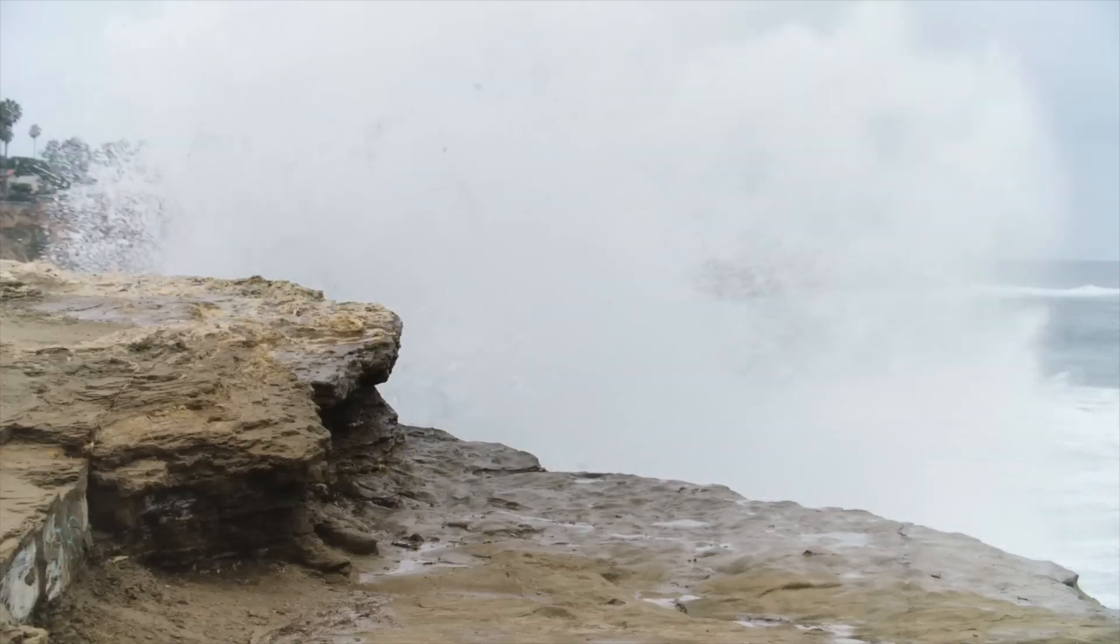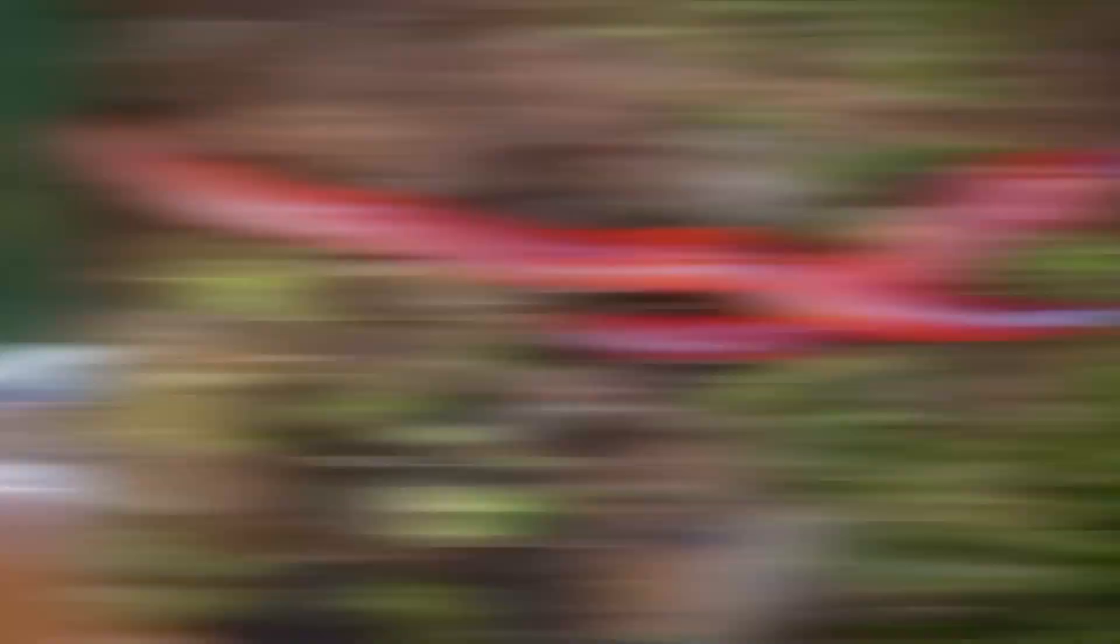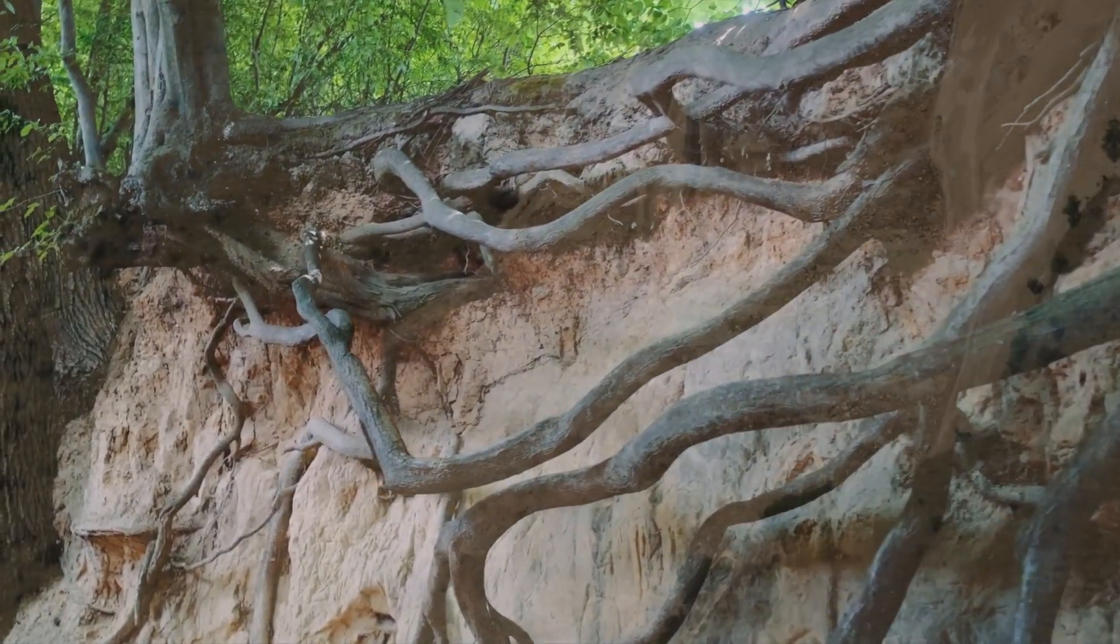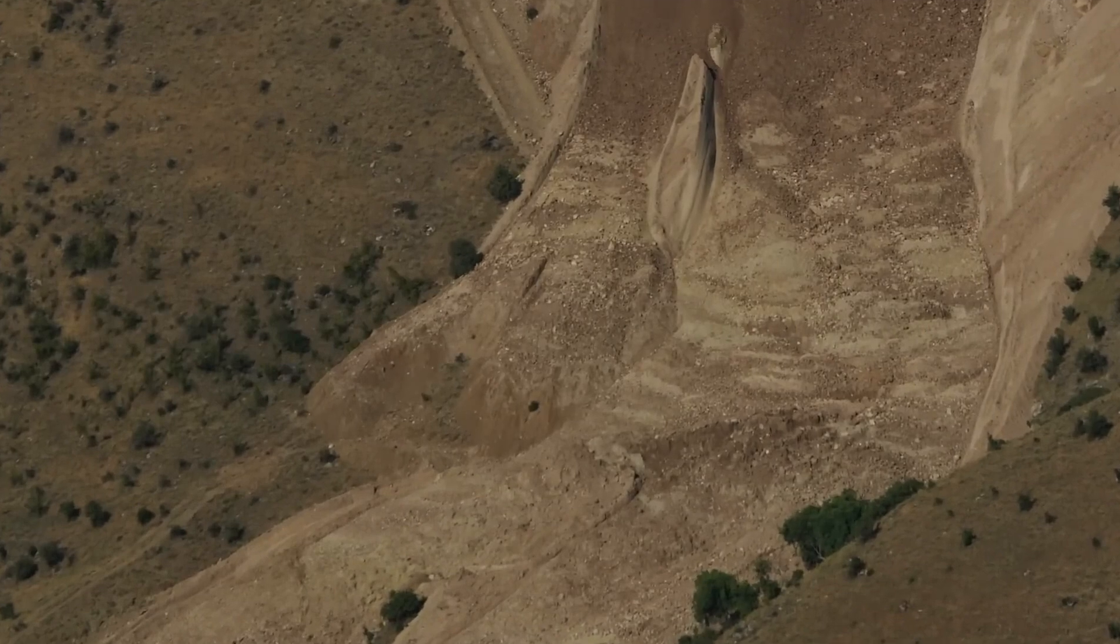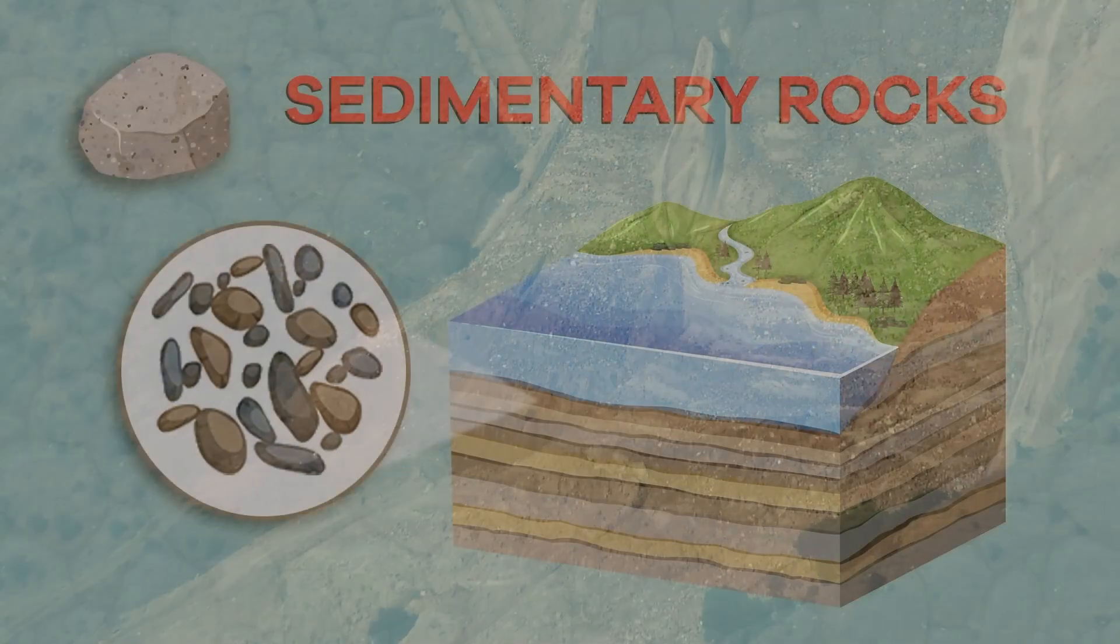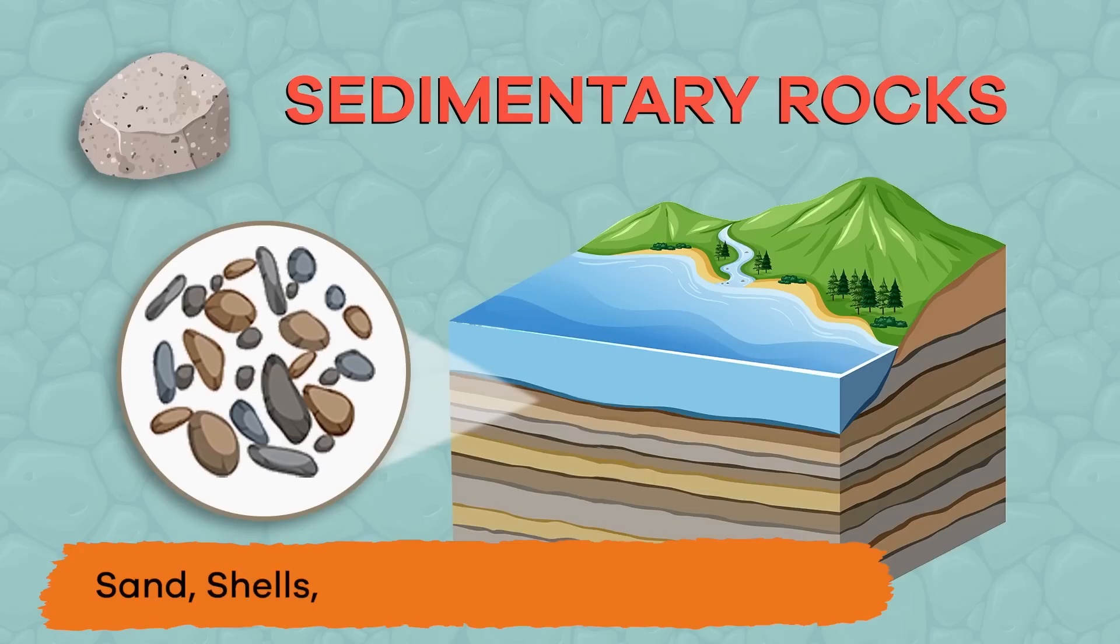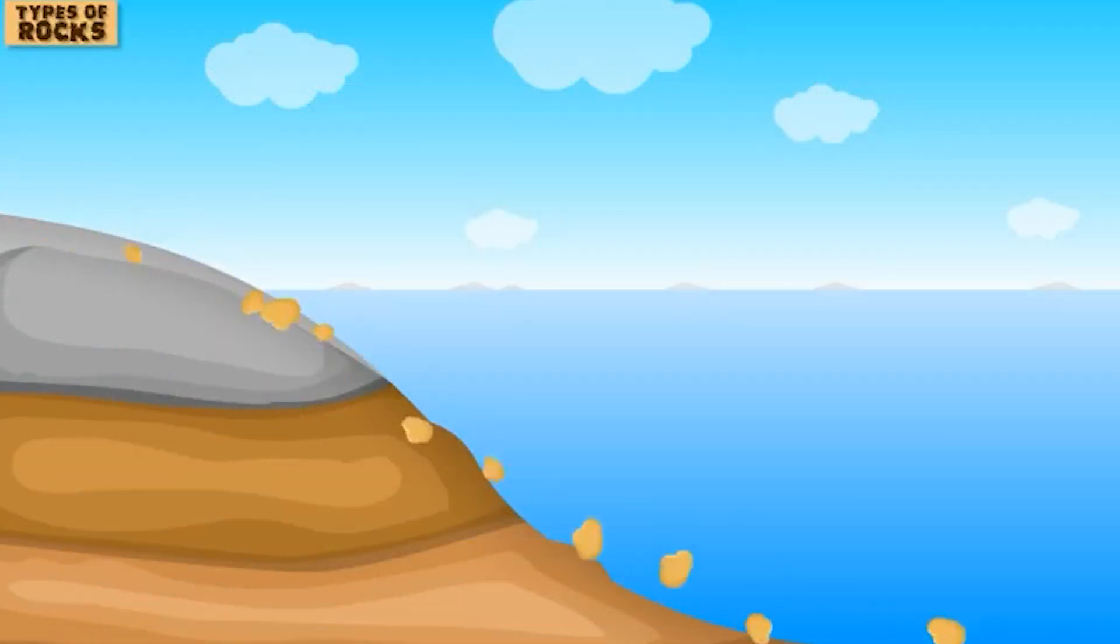Igneous rocks don't stay as they are forever. Over time, these igneous rocks are broken down by weathering and erosion. Wind, water, ice, or even the roots of plants break the rocks into smaller particles like sand, silt, and clay. These small fragments are then transported by rivers or the wind, often settling in layers on the ocean floor or along river beds.